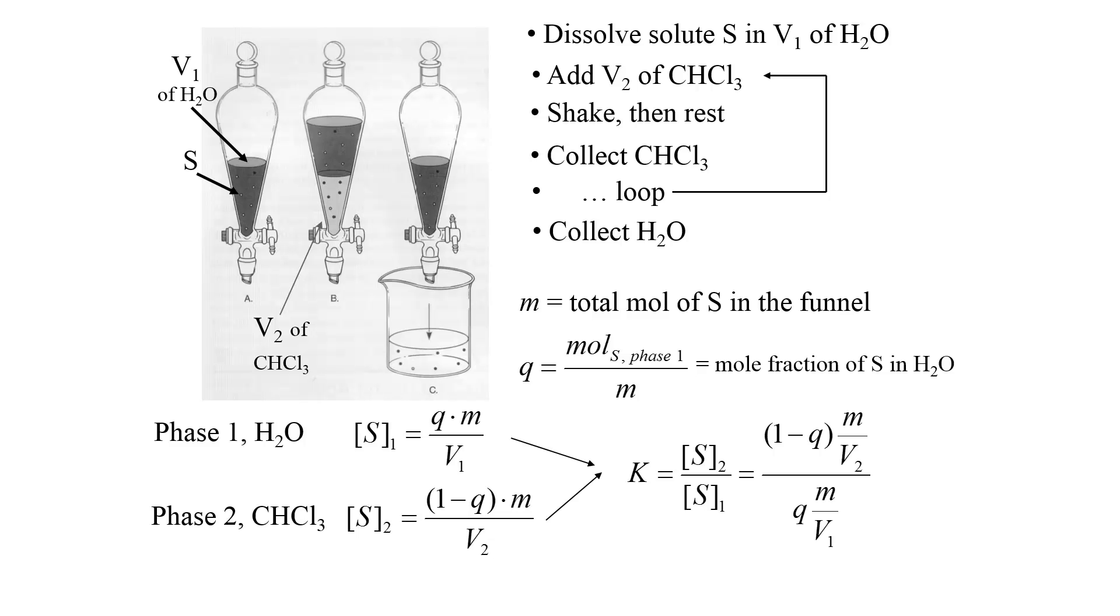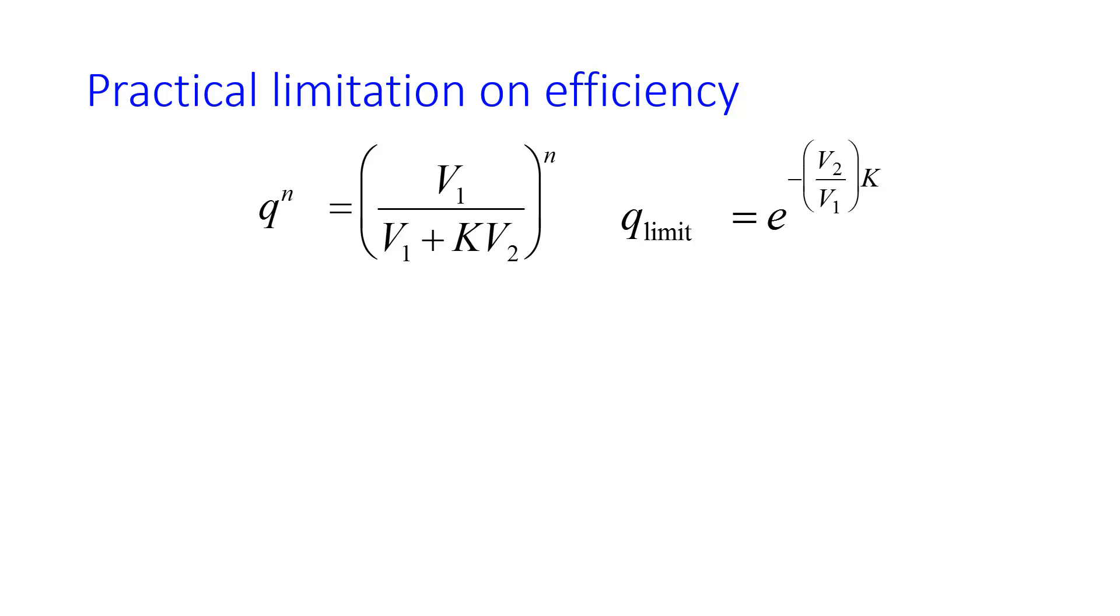If you combine these equations into the partition coefficient equation, you get an expression for the efficiency of your separation, where Q to the N is the amount of analyte left in phase 1 after N separations. And in this case, you raise this equation for Q to the power of N, however many identical separations you do.